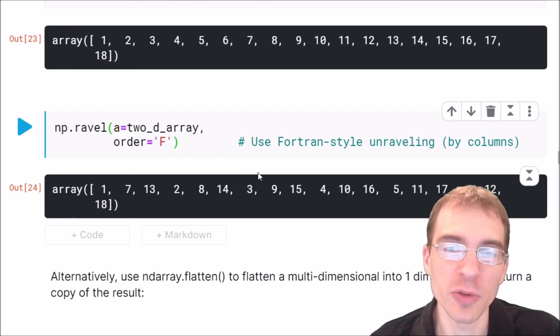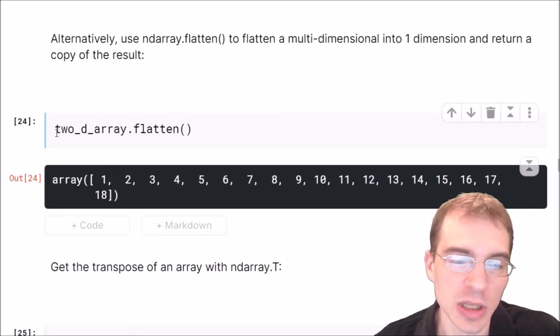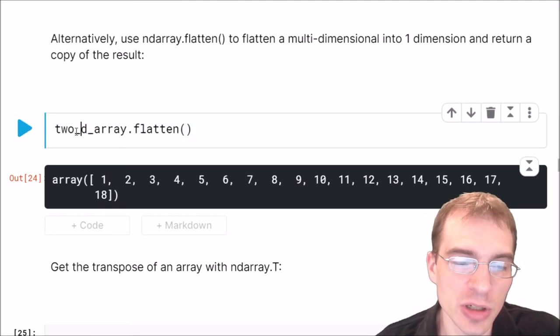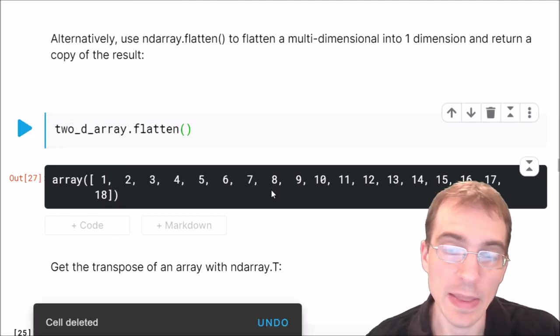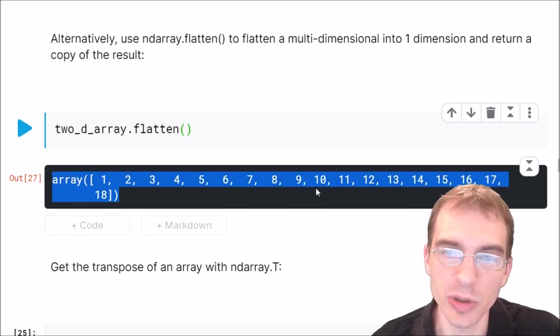An alternative way of doing the same thing is using the dot flatten function. Here we can say 2d array dot flatten, and that will return a copy of the 2D array flattened into a 1D array.